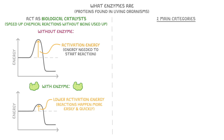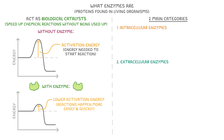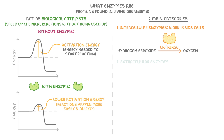Enzymes can be sorted into two main categories: intracellular enzymes and extracellular enzymes. Starting with intracellular enzymes, these work inside of our cells. As an example, catalase is an intracellular enzyme that helps to break down hydrogen peroxide, which is a harmful waste product in cells, into harmless oxygen and water. And because it's an intracellular enzyme, this is all happening inside of our cells.